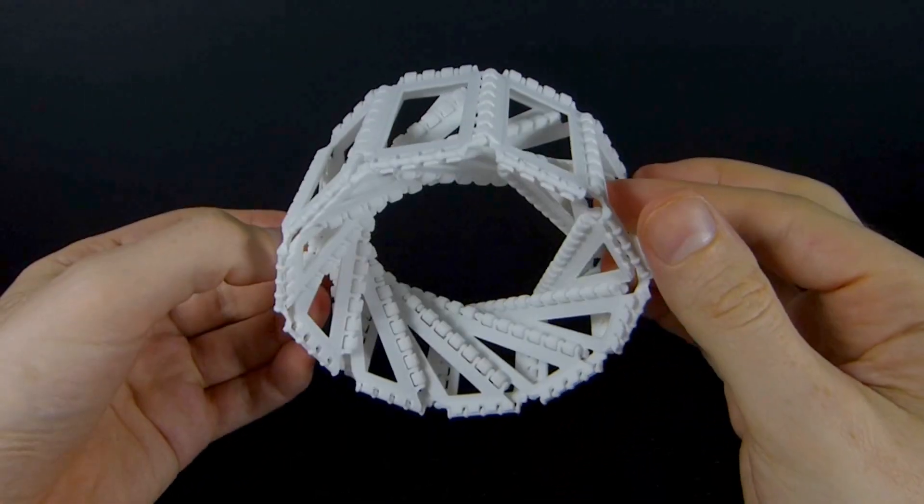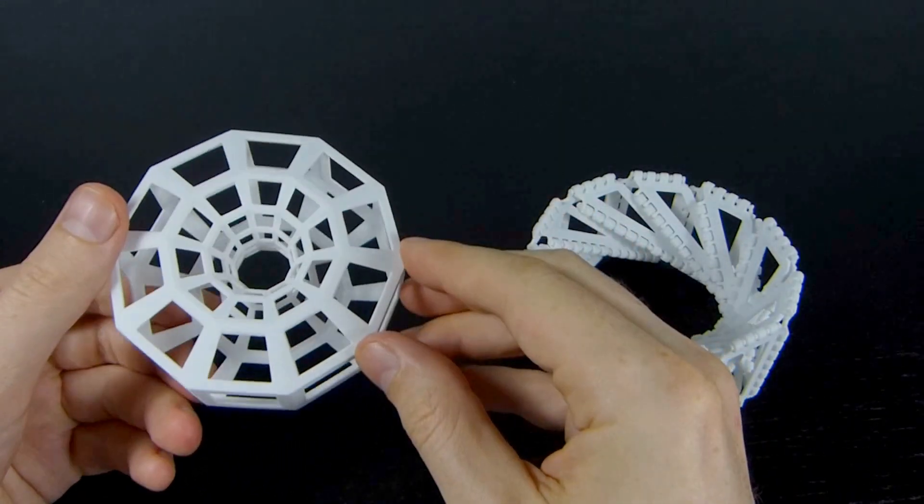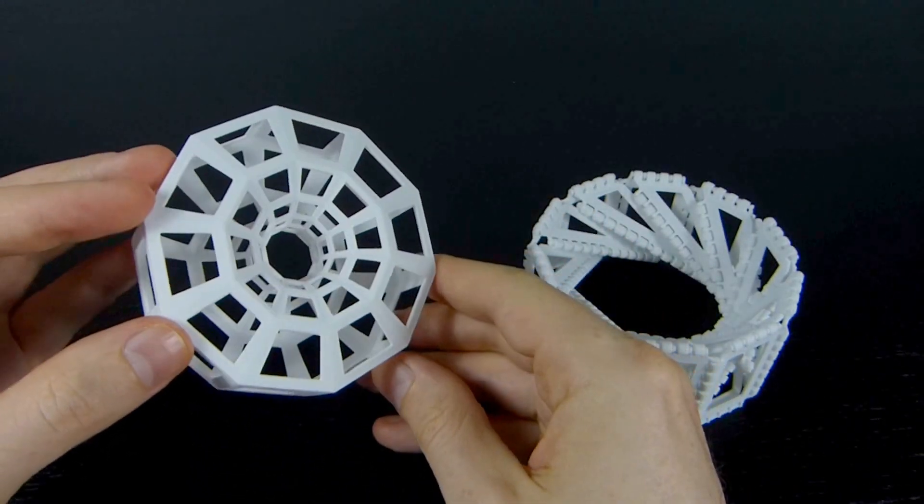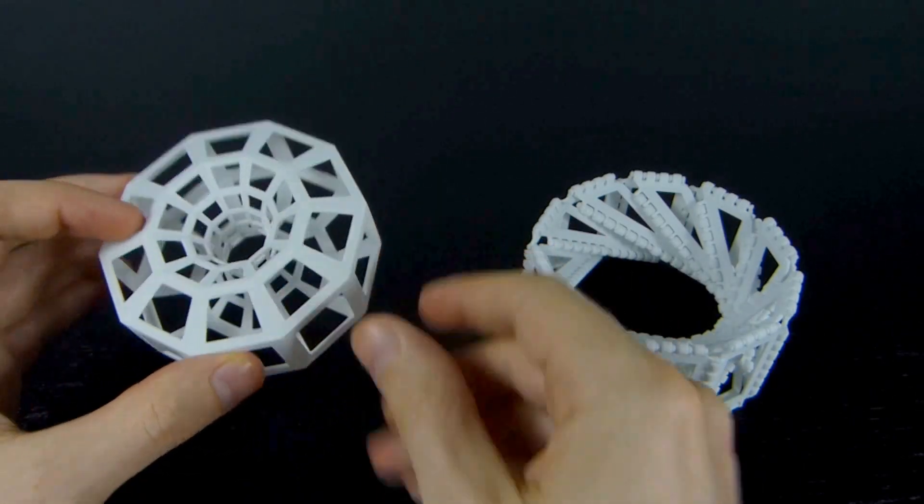In order to explain what this is about, let's bring on a more usual picture of a torus, a sort of donut shape. It's a surface with a hole that goes through it.